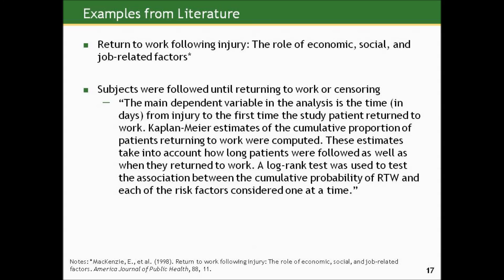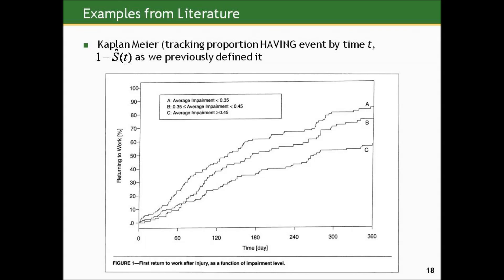One example of a risk factor was the level of impairment — they wanted to see if there were differences in these curves by level of impairment. What they show graphically are Kaplan-Meier curves by three different classifications: high impairment group C, medium impairment group B, and low impairment group A. What they're doing here is actually showing the opposite of the way we typically present it — and this is a good way to present it as well.